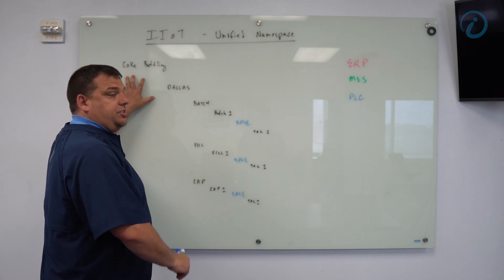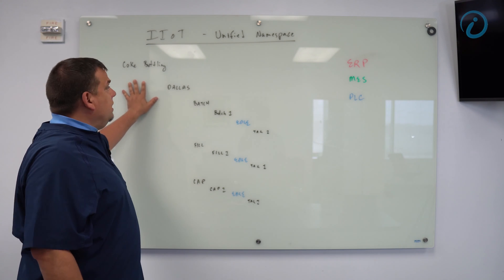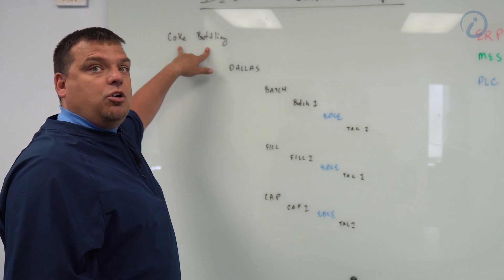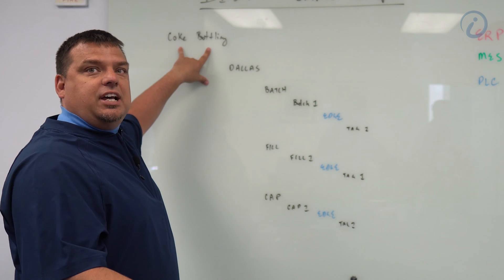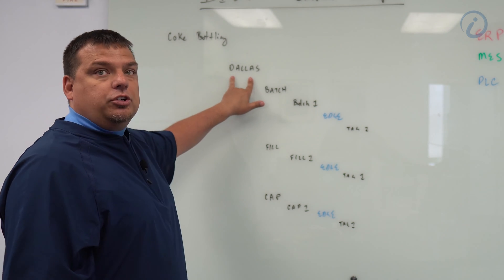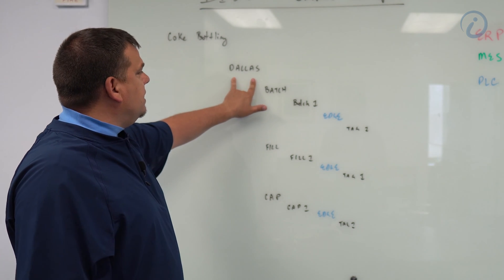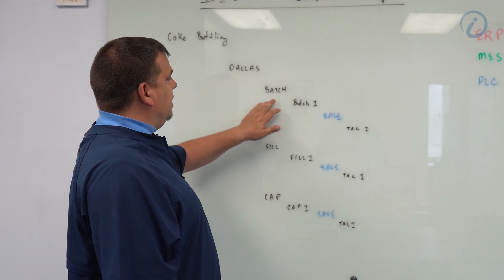So what we're looking at here is this is tag structure. Anybody who's been inside the Ignition Designer, this should look familiar to you. I have a folder called Coke Bottling, which is the name of my tag provider inside of Ignition. I've got a folder called Dallas, which is the location, the plant that we're using in the Coke Bottling example. And then this is the area level. This is the ISA 95 level.